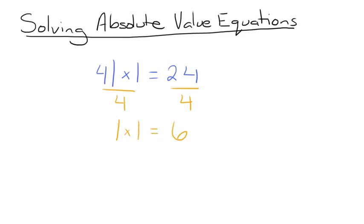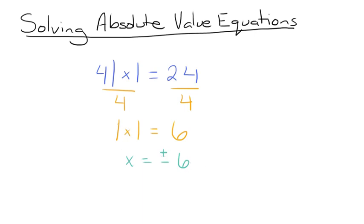Then, remember the definition of absolute value — the absolute value of a number is always positive. So x can equal either positive or negative 6. Because if we take the absolute value of positive 6, we get 6, and if we take the absolute value of negative 6, we also get positive 6. So the value for x inside the absolute value bars is positive or negative 6. That's how we solve a simple absolute value equation.